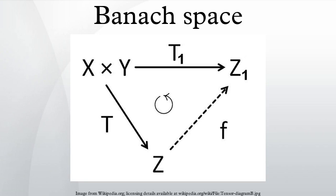The weak topology on a Banach space X is the coarsest topology on X for which all elements of the continuous dual space X* are continuous. The norm topology is therefore finer than the weak topology. It follows from the Hahn–Banach separation theorem that the weak topology is Hausdorff, and that a norm-closed convex subset of a Banach space is also weakly closed. A norm-continuous linear map between two Banach spaces X and Y is also weakly continuous, that is, continuous from the weak topology of X to that of Y.